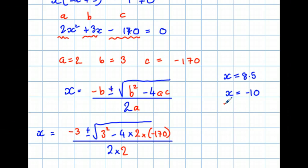So, X could equal 8.5 or minus 10. In this context, we reject minus 10 because you can't have a negative length. Okay? And that's how we form and solve equations.